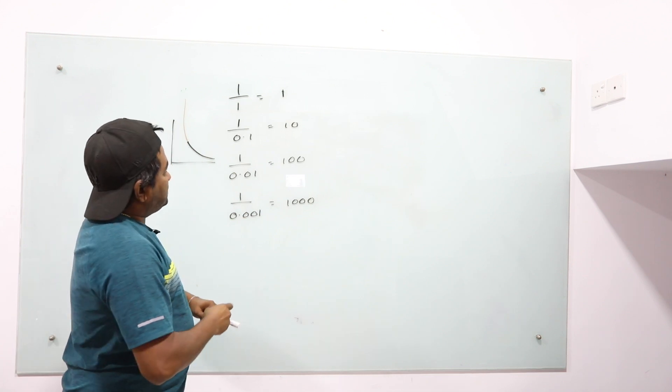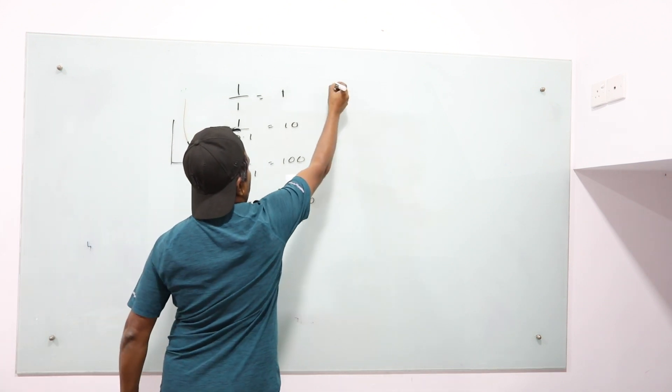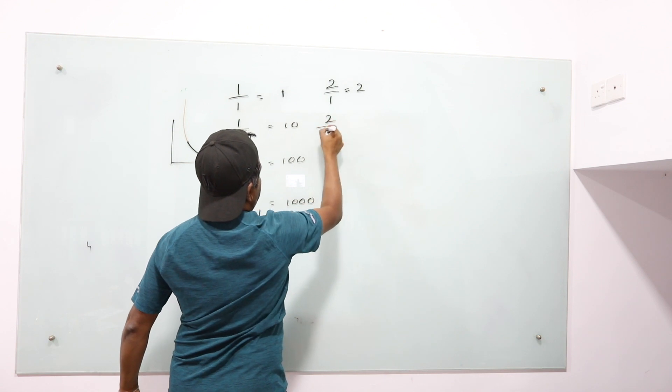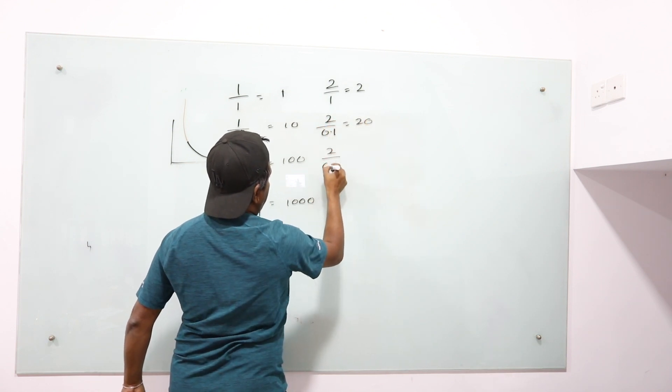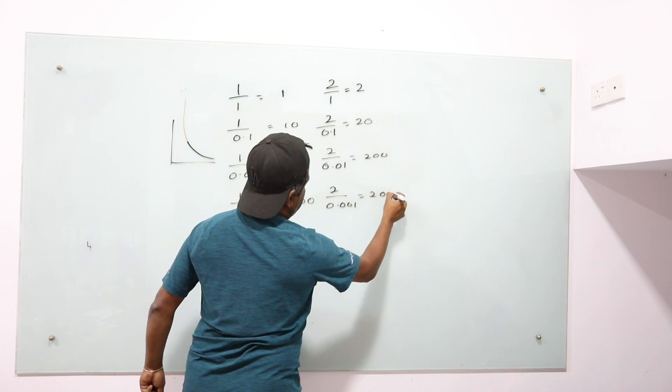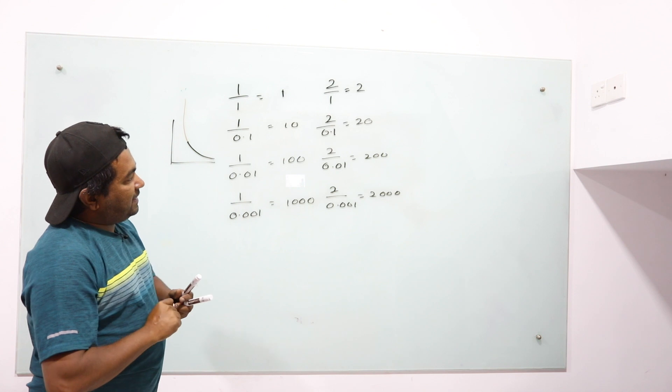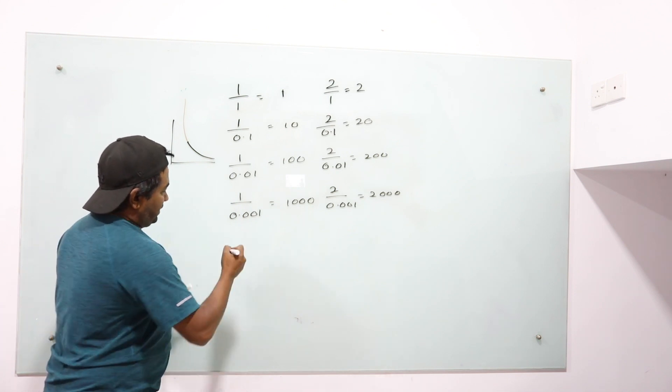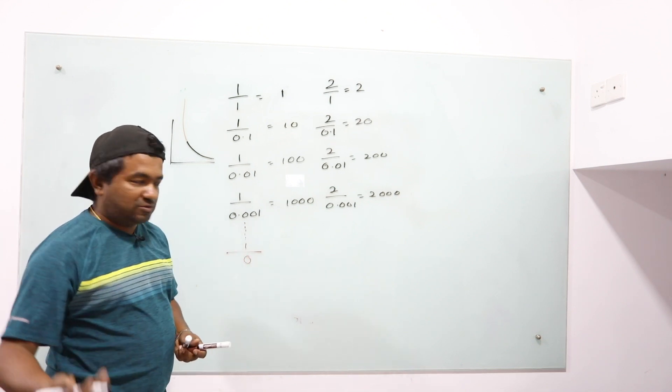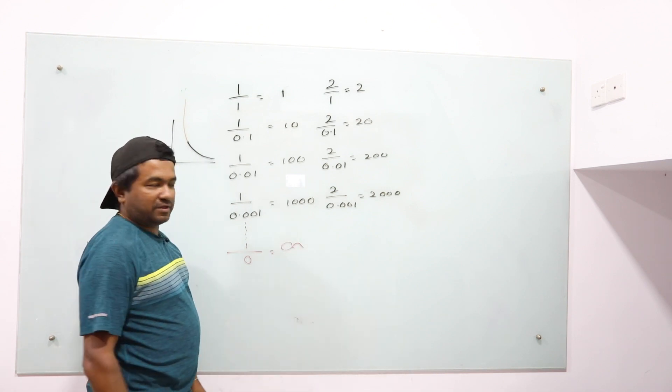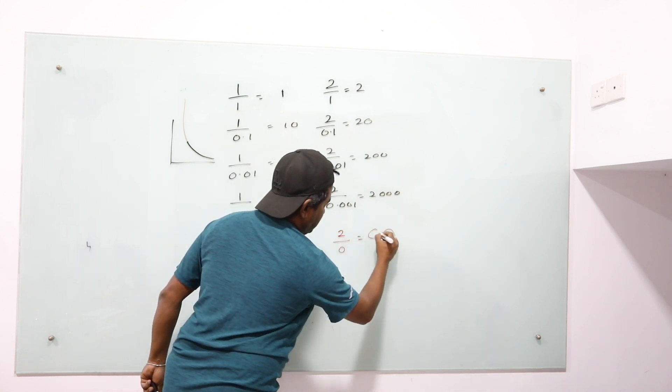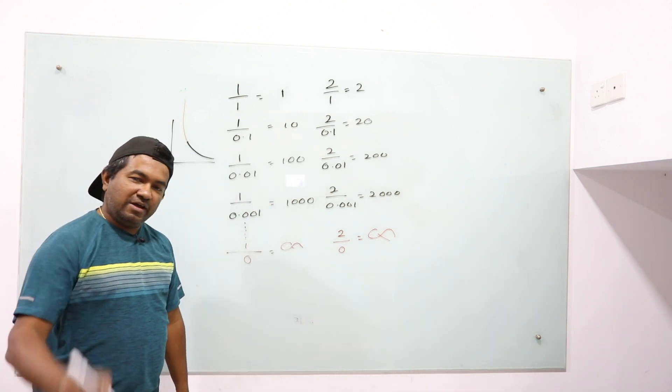So now what happens if you divide 2 by 1? You get 2. 2 by 0.1, you get 20. 2 by 0.01, you get 200. 2 by 0.001, you get 2000, right? So still the same. But here's what: if we say 1 divided by 0 approaches infinity, then according to the usual theory, 2 divided by 0 also approaches infinity.